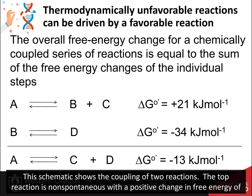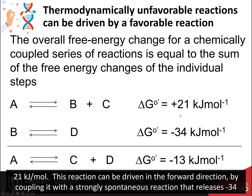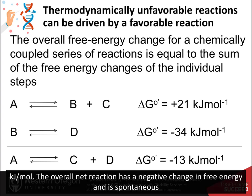This schematic shows the coupling of two reactions. The top reaction is non-spontaneous with a positive change of free energy of 21 kilojoules per mole. This reaction can be driven in the forward direction by coupling it with a strongly spontaneous reaction that releases 34 kilojoules per mole. The overall net reaction has a negative change in free energy and is spontaneous.